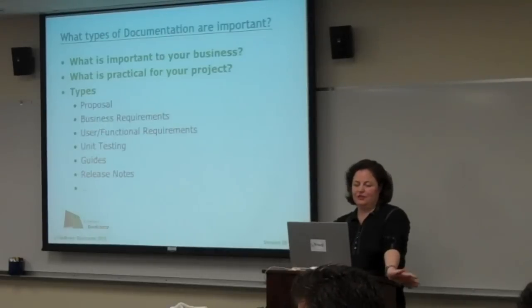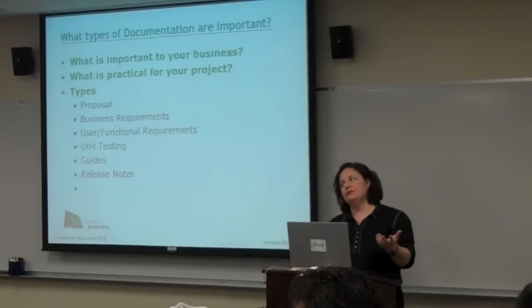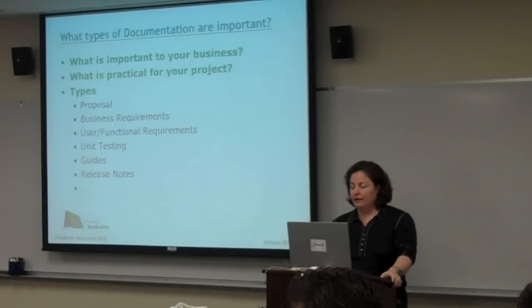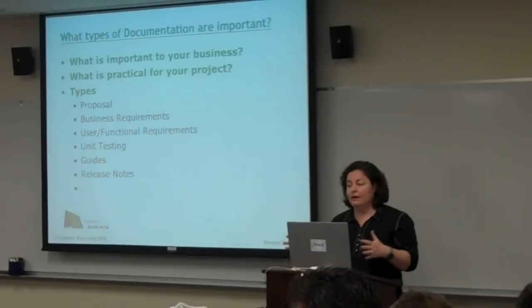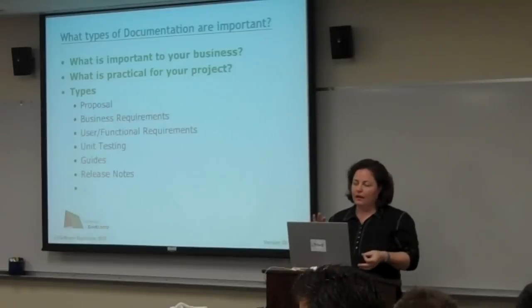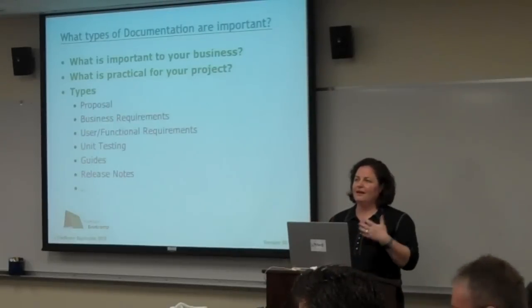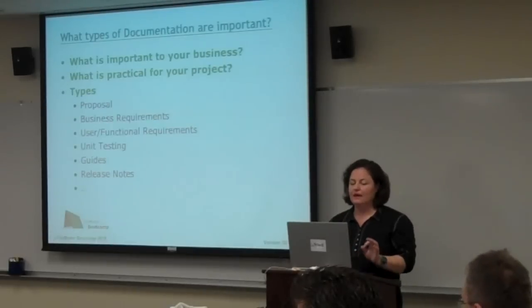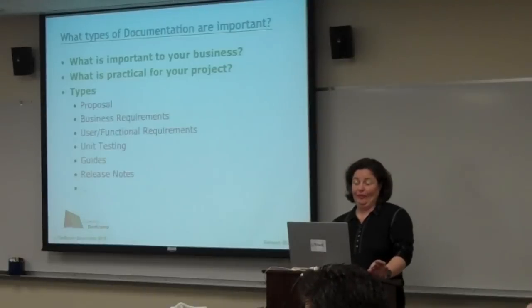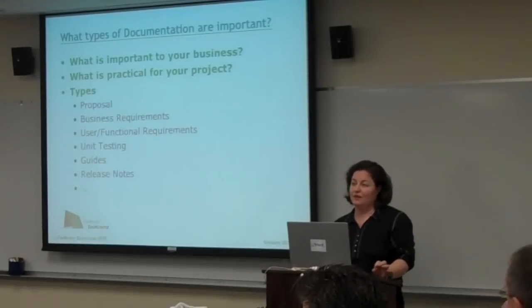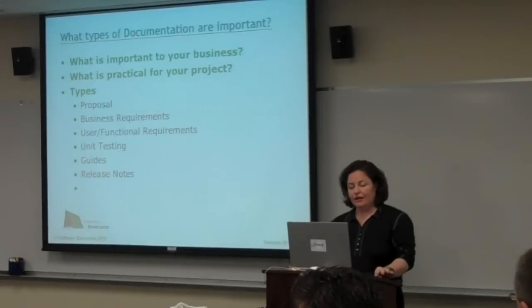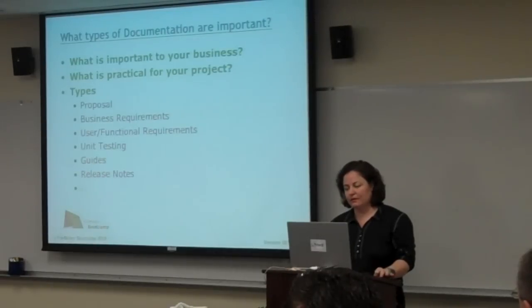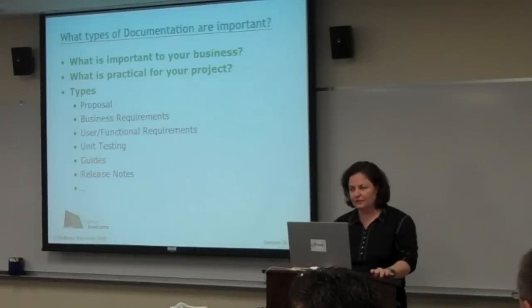As some examples of types of documentation: there's your proposal to the client, or if you're internal, your proposal to a manager of what you would like to see built. If you're a contractor, you might not see the initial request or business requirements, but you should at least get a copy of them if they exist. Your user and functional requirements are the documentation talking about the design, development, and deployment of your system.